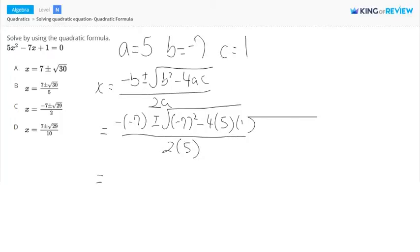So that equals negative minus 7, so that's 7 plus or minus square root of 49 minus 4 times 5, which is going to be minus 20, over 2 times 5, which is 10.